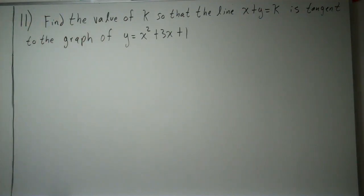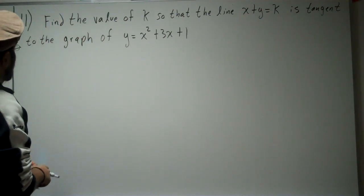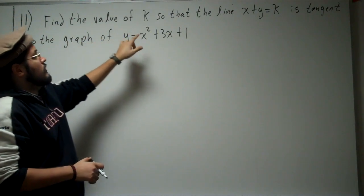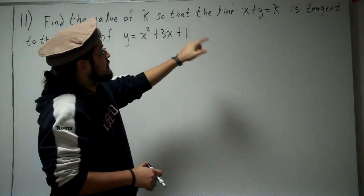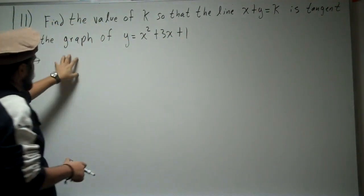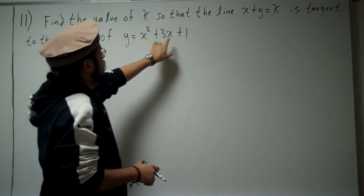Alright, now we're going to do problem 11. Find the value of k so that the line x plus y equals k is tangent to the graph of y equals x squared plus 3x plus 1.